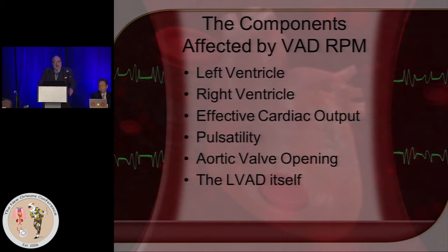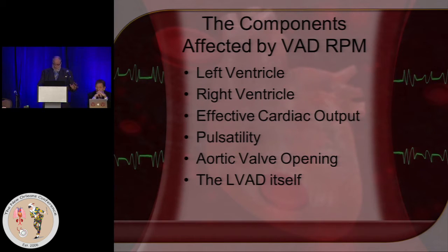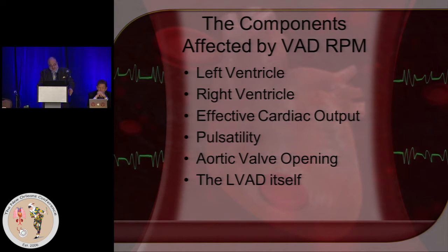I firmly believe that titrating LVAD RPMs is akin to trying to negotiate between these two evils. I've broken up the components affected by VAD RPM or speed as: the LV, the RV, the total effective cardiac output, the pulsatility systemically, whether the aortic valve opens or not, and the LVAD itself. I'm going to analyze each of these in turn.